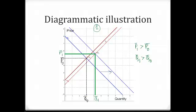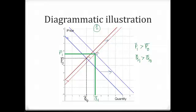Simultaneously, supply has increased, represented by the outward shift in the supply curve to the new supply curve in broken lines. The new supply curve and the new demand curve intersect at the point labeled equilibrium sub 1. Our new equilibrium price, P1 bar, as you can see, is higher than P0 bar. Equilibrium quantity, Q1 bar, is greater than the initial equilibrium quantity, Q0 bar.